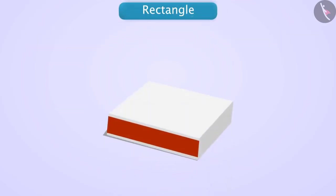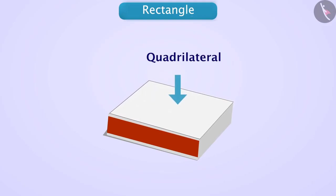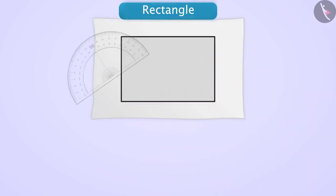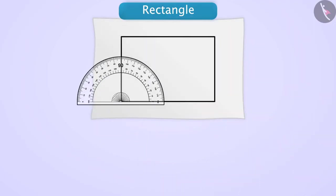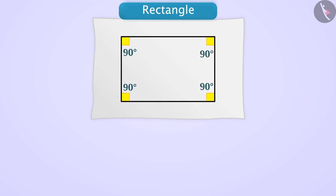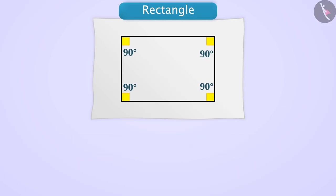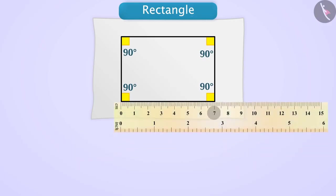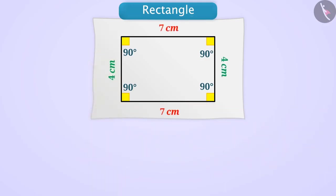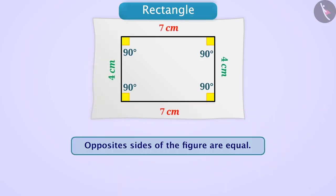Rectangle. Take a matchbox and observe any one of its flat surfaces. You will see a quadrilateral. Place it on a paper and draw its outline. Now find the measure of each angle with the help of a protractor. You will find that each angle is 90 degrees, which means that each angle in this figure is a right angle.